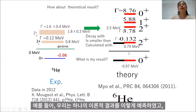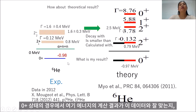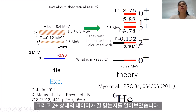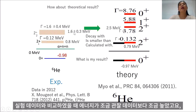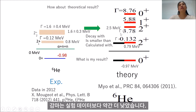It is interesting to compare with theoretical results. For example, we show one of the theoretical results by Myo-san. In the case of the 0+ ground state, his calculated energy is in good agreement with the data, and also the first 2+ state is in good agreement. He also predicts the second 2+ state, and in comparison with the experimental data, the energy is a little bit higher than the observed data and gamma is a little bit broader than the experimental data.